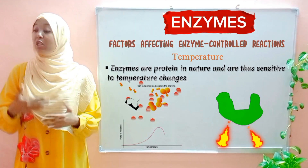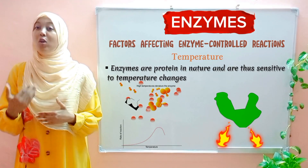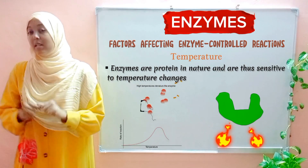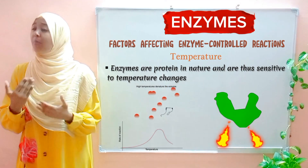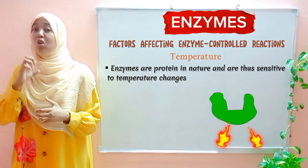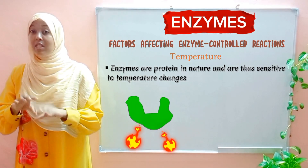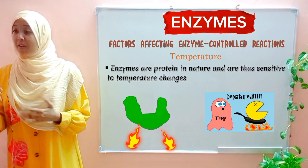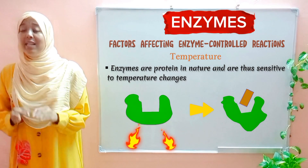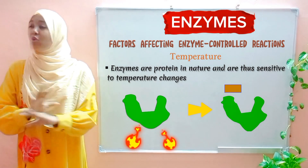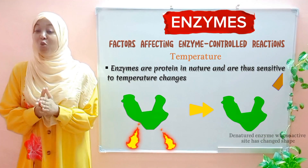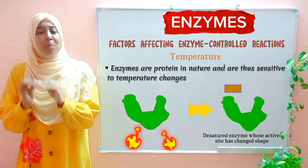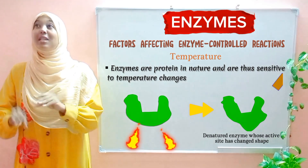If you continue to increase the temperature above 40 degrees Celsius, it will end up destroying the enzymes. High temperatures above 40°C destroy the structure of an enzyme — this process is referred to as denaturing. The structure of an enzyme is very important to its functioning, so be sure to check out the previous video discussing characteristics of enzymes for more detail on this.